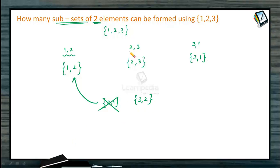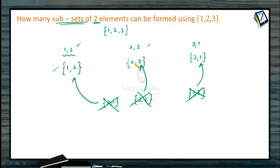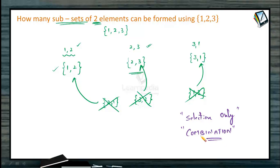Similarly, {3, 2} is the same subset as {2, 3}, and {1, 3} is the same as {3, 1}. There is no positional importance — selecting 1 and 2 gives exactly one subset. The ordering of elements is not required. When only selection is done with no internal positioning, such a selection is called a combination.